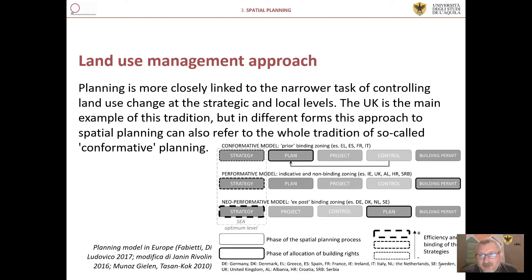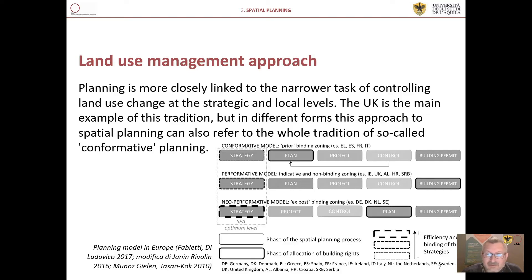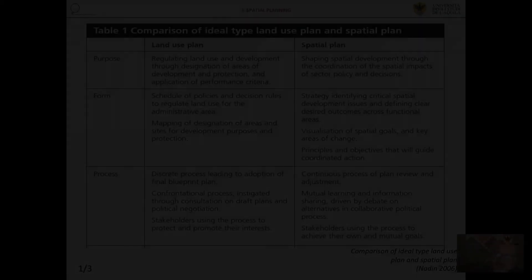The neo-performative model still focuses on binding zoning, but manages to neutralize the preventive effectiveness of the conformative model by ensuring that spatial transformation rights are allocated — as with the performative model — after the transformation projects have been submitted to public control. In this case, the public strategy is used as a basis for the collection of projects, their monitoring and subsequent negotiations with stakeholders.